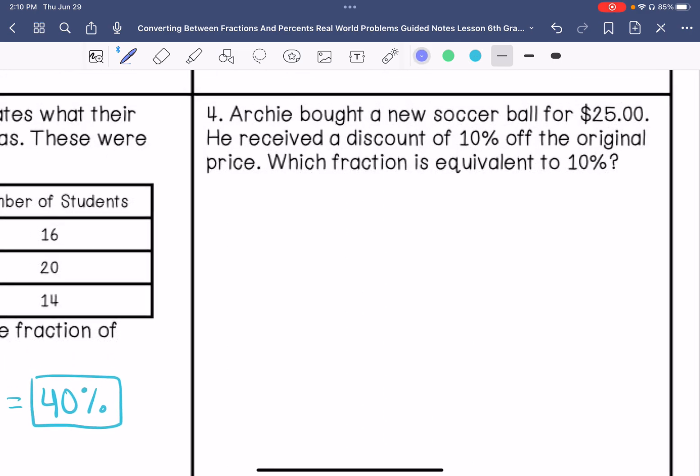Archie bought a new soccer ball for $25. He received a discount of 10 percent off the original price. What fraction is equivalent to 10 percent? So it's kind of giving us extra information. 10 over 100, and then we're going to divide that by 10. That is one tenth.